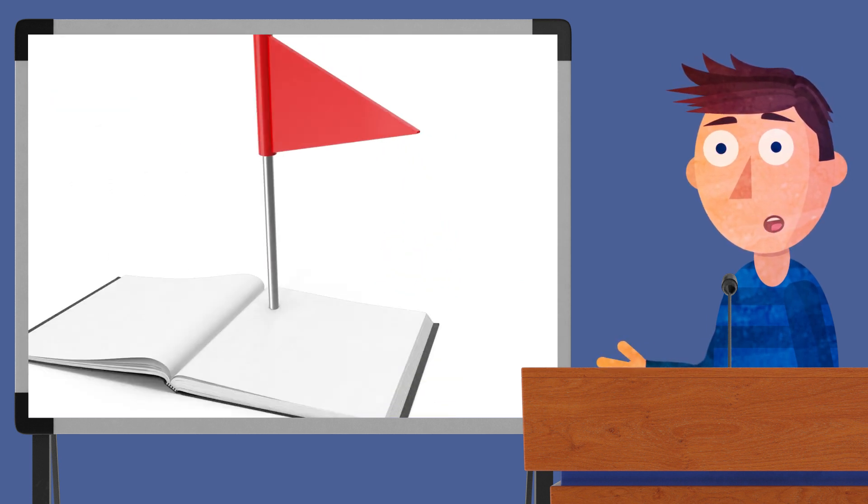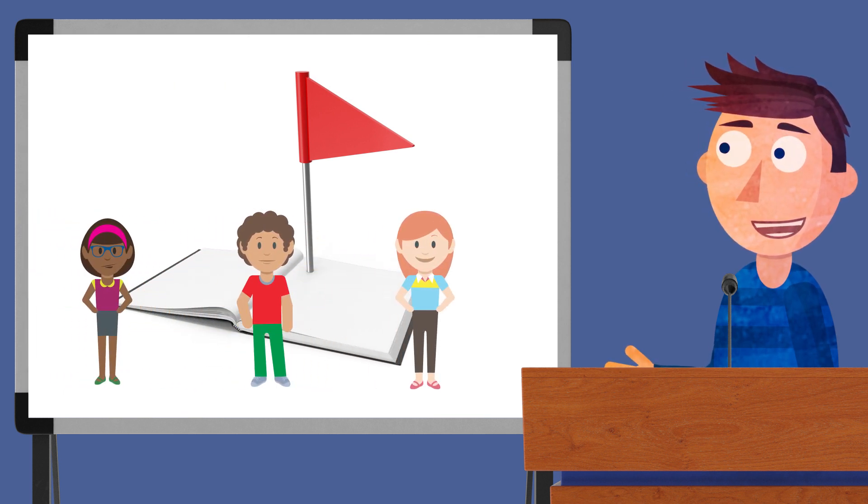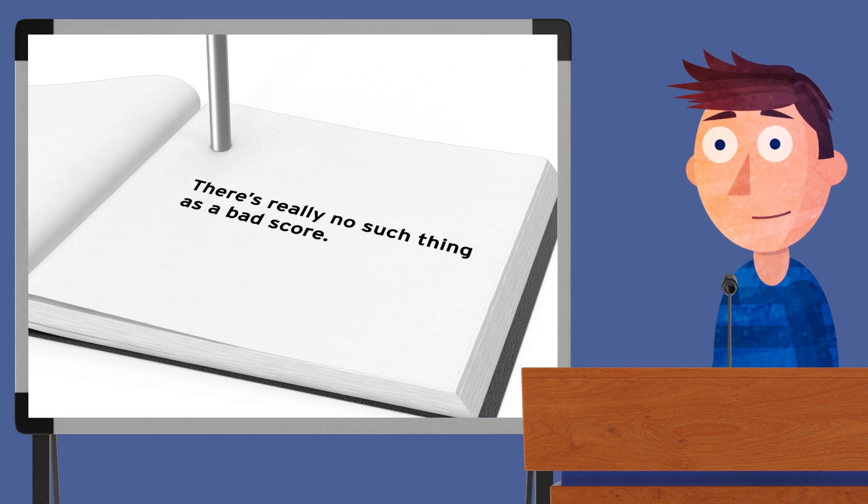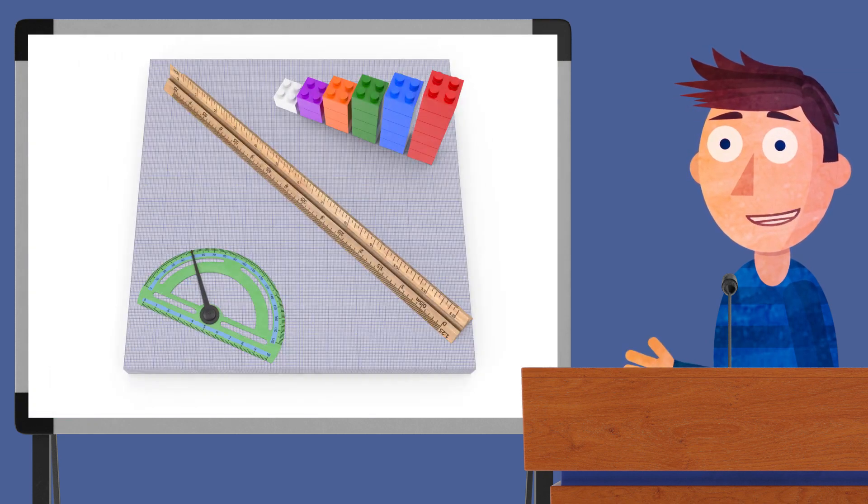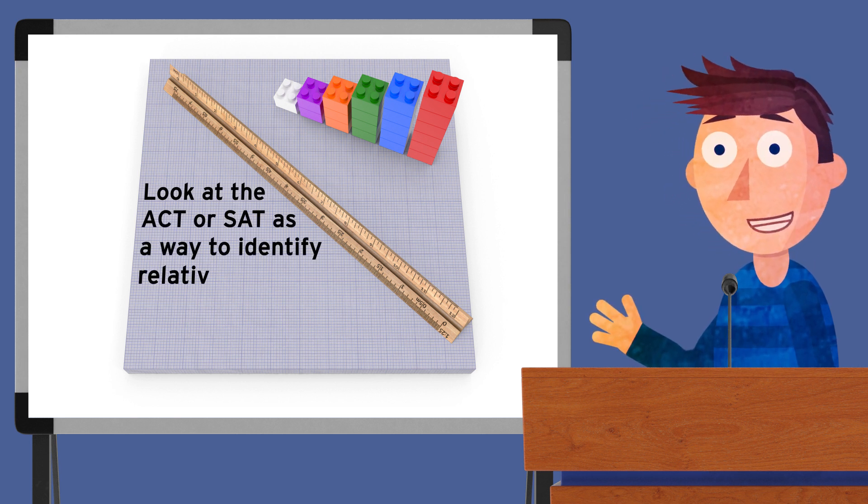As you look at these scores, there's one very important thing to remember. For students taking the ACT or SAT as a 7th grader, there's really no such thing as a bad score. DukeTip encourages you to look at above-level tests as diagnostic tools, a way to identify relative academic strengths.